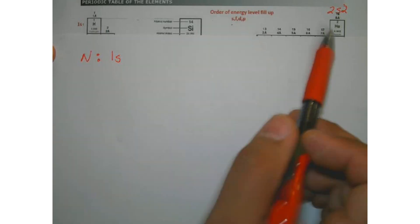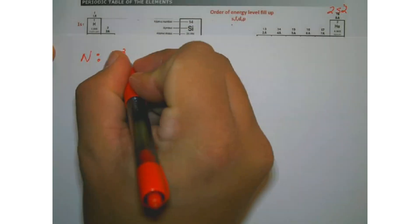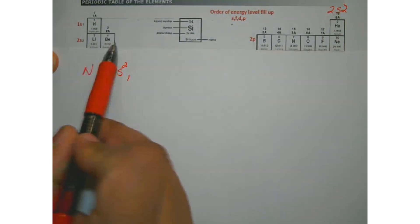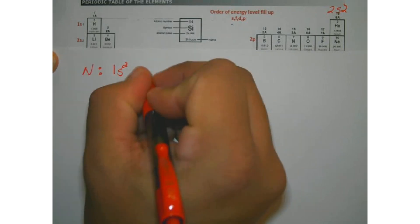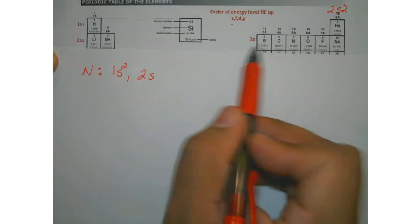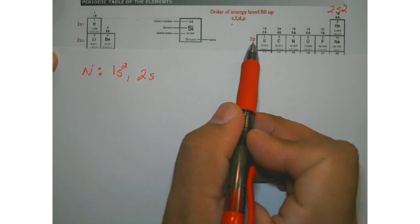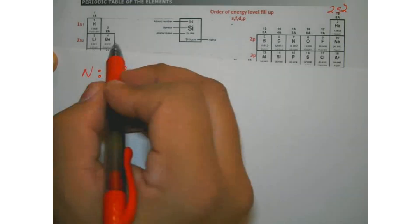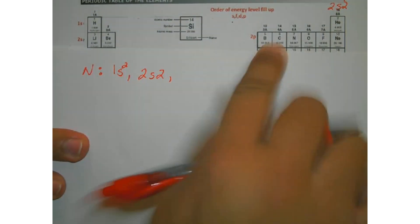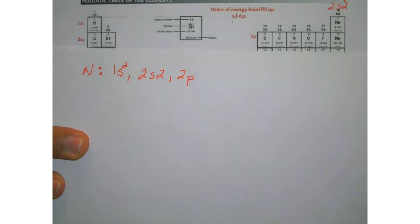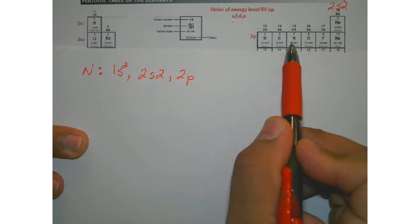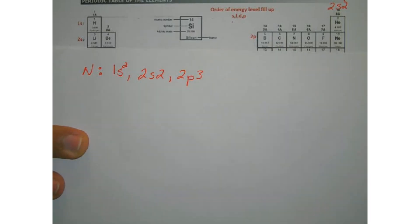Now I'm at the 2S level. How many elements do I go through? If I go straight through, I hit the 2P. So for 2S, I'm only going through two elements — 2S2. Then I hit the 2P. Now, where is nitrogen in the 2P? One, two, three — it's the third one. So I put 2P3. That gives us the electron configuration for nitrogen: 1S2, 2S2, 2P3.